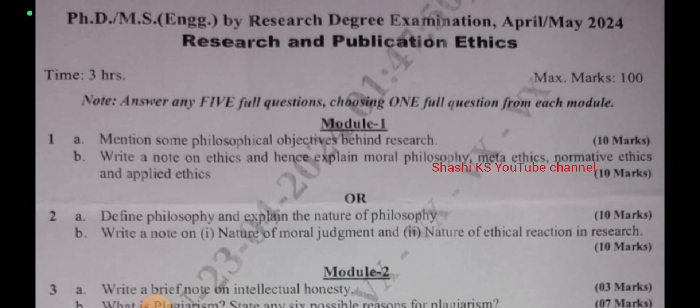Question 1a: Mention some philosophical objectives behind research — asked for 10 marks. Write a note on ethics and explain the moral philosophy: meta-ethics, normative ethics, and applied ethics — asked for 10 marks. The or-choice: define philosophy and explain the nature of philosophy. In 1b: write a note on the nature of moral judgment and nature of ethical reaction in research — asked for 10 marks.